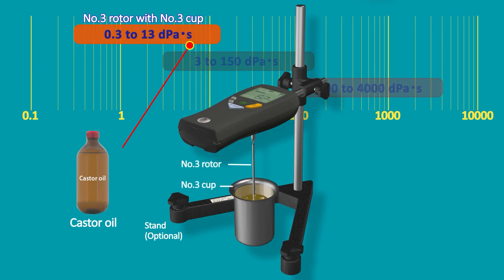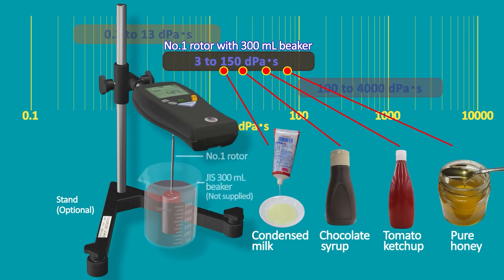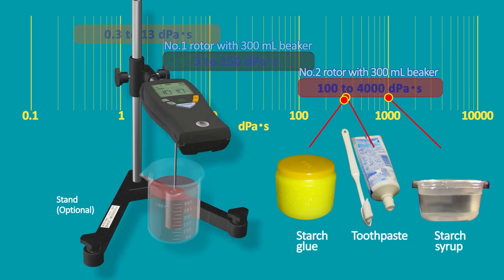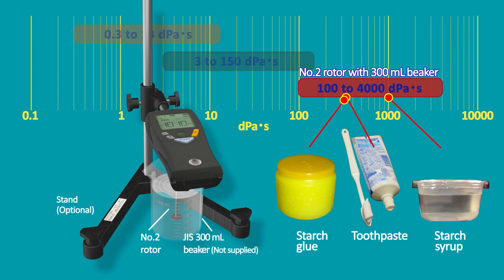The number three rotor with the number three cup covers 0.3 to 13 decipascal fluids. The number one rotor with the JIS 300ml beaker covers 3 to 150 decipascal fluids. The number two rotor with the JIS 300ml beaker covers 100 to 4000 decipascal fluids.